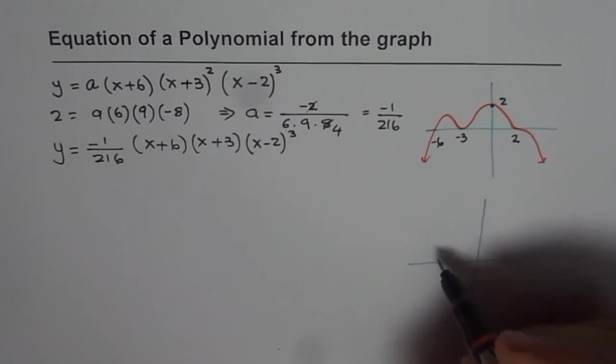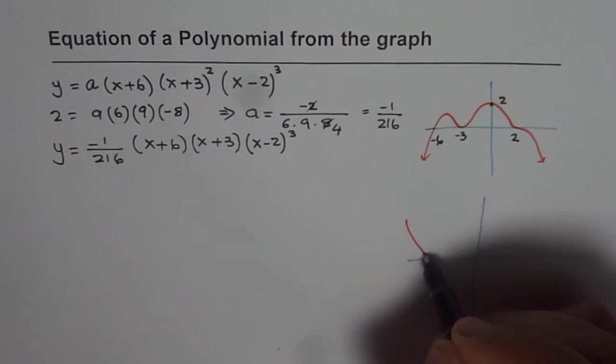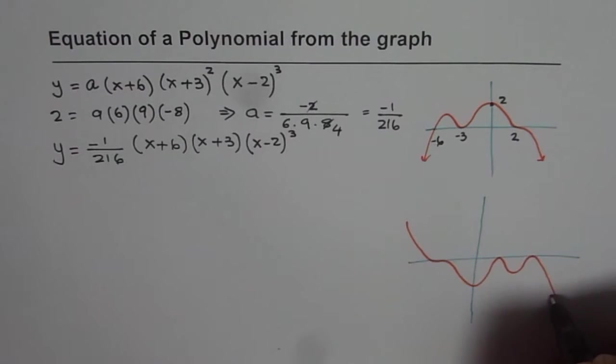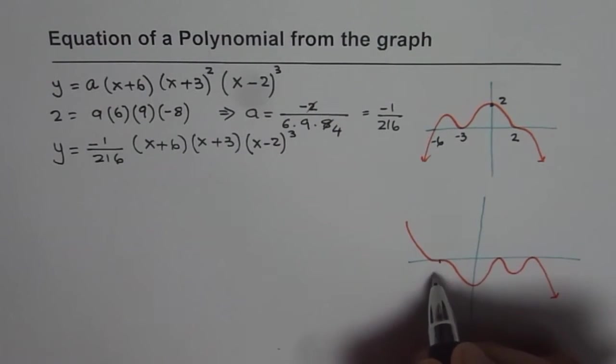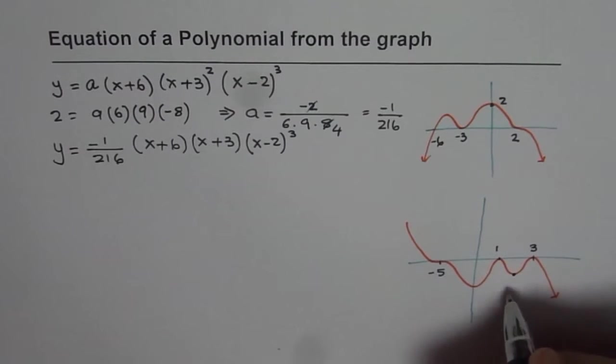Now this time let me start from this side and let's say that we have a graph which goes like this and it kind of flattens out here. It goes kind of like this, comes down, comes down and like this. Now we are given that the x intercepts for this graph are, let us say this point is minus 5, this point is 1, this point is 3 for us and we are given some other point this time, let us say this point is 2 minus 1.